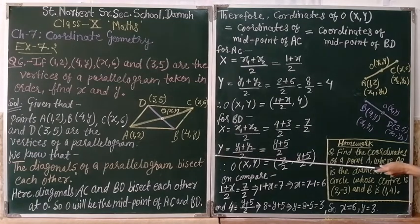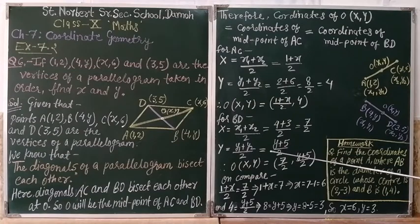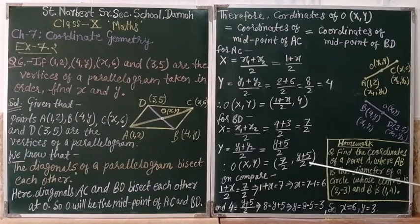Now y equals (y₁ + y₂)/2. We will keep the values and we will get (y + 5)/2. Now these are the coordinates of O for BD line segment. So we will write it as (7/2, (y + 5)/2).